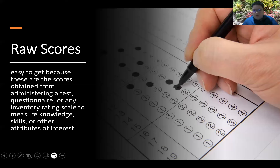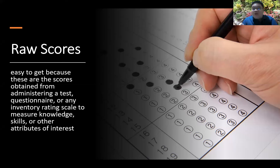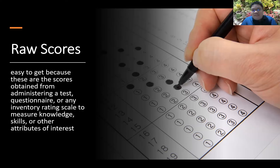The first term we need to know is raw score. When we say raw score, it means the score of the child or pupil himself. For example, when you took your prelim exams, somebody got a score of 65, another got 74, another got 86 — those are raw scores. They are said to be easy to get because these are scores obtained from administering a test, questionnaire, or any inventory rating skill to measure knowledge, skills, or attributes of interest.